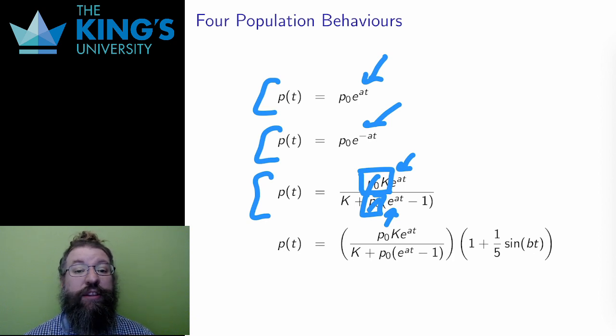This is the logistic growth model, and k is called the carrying capacity. This is a model which describes a population that fills its environment, and then persists at a stable, unchanging level.